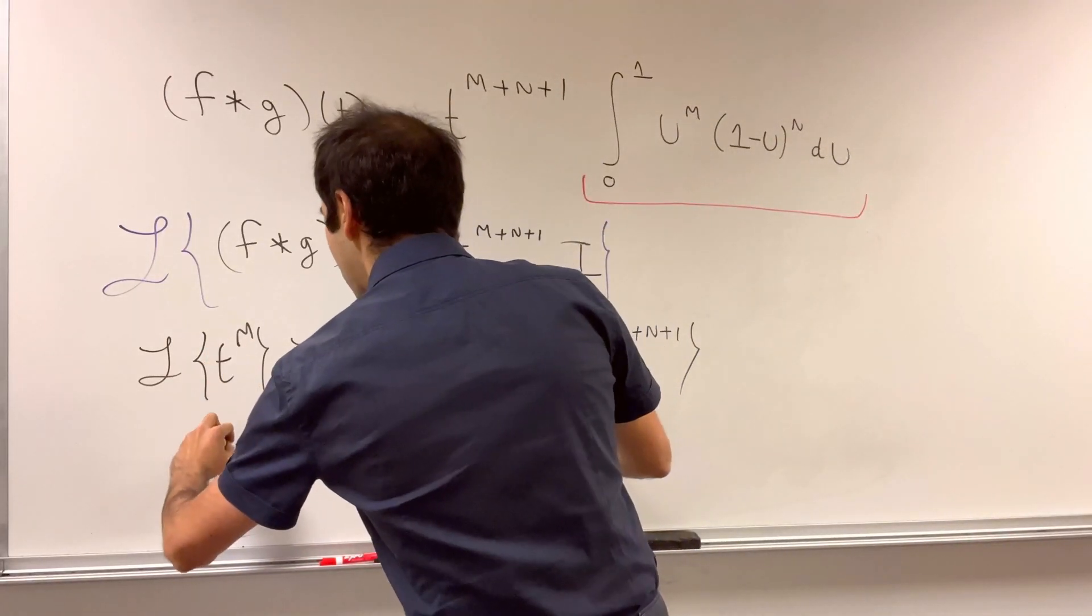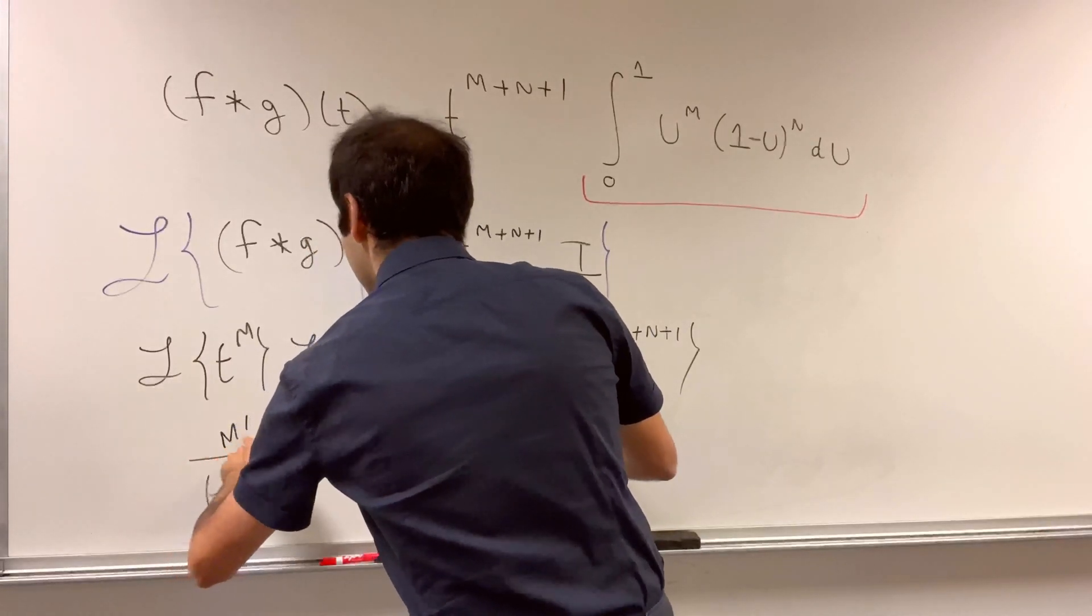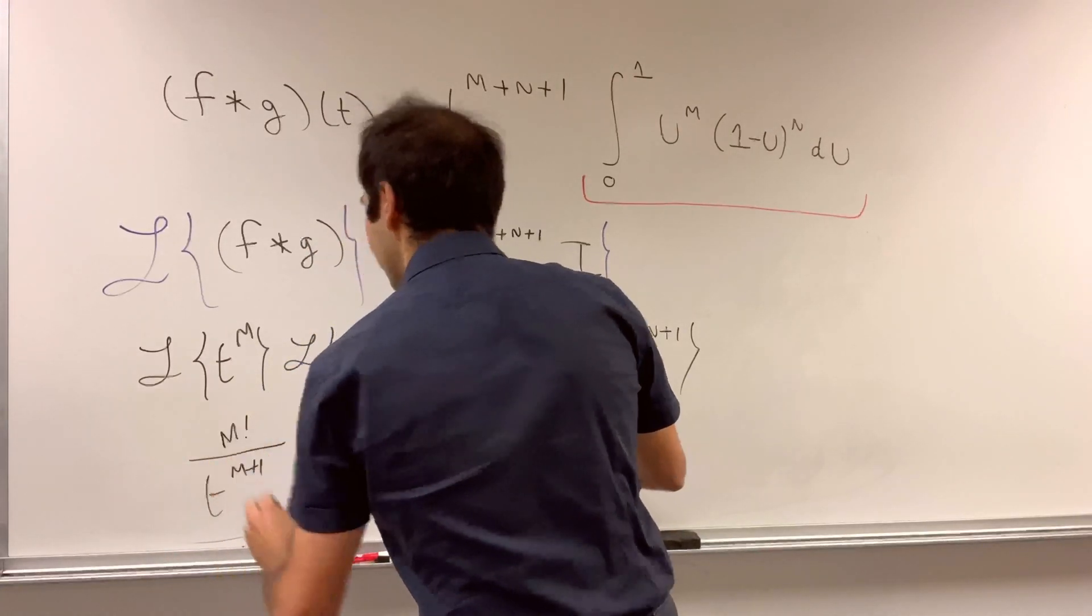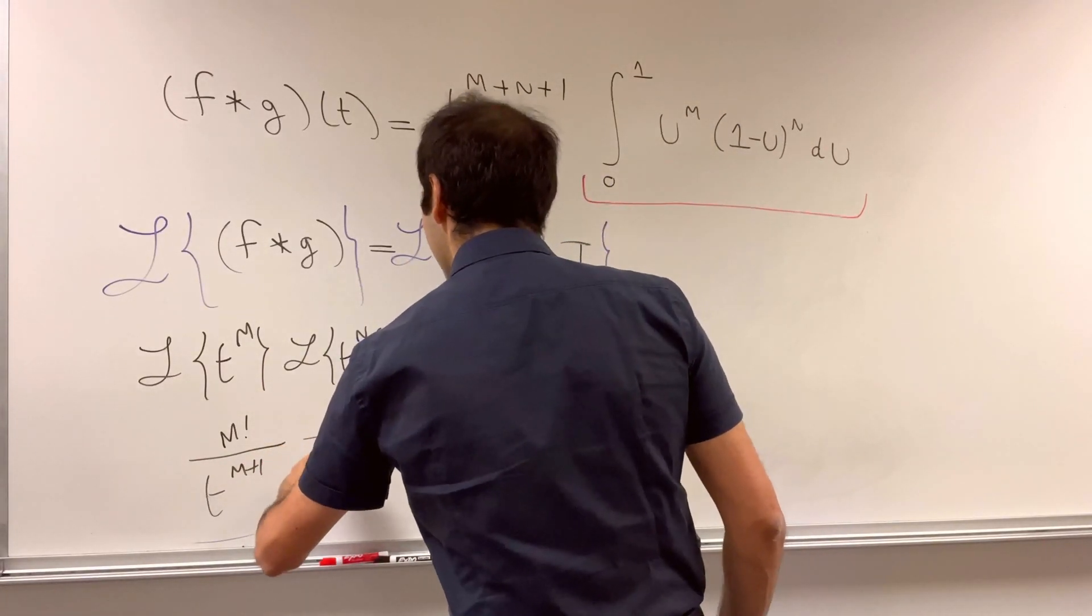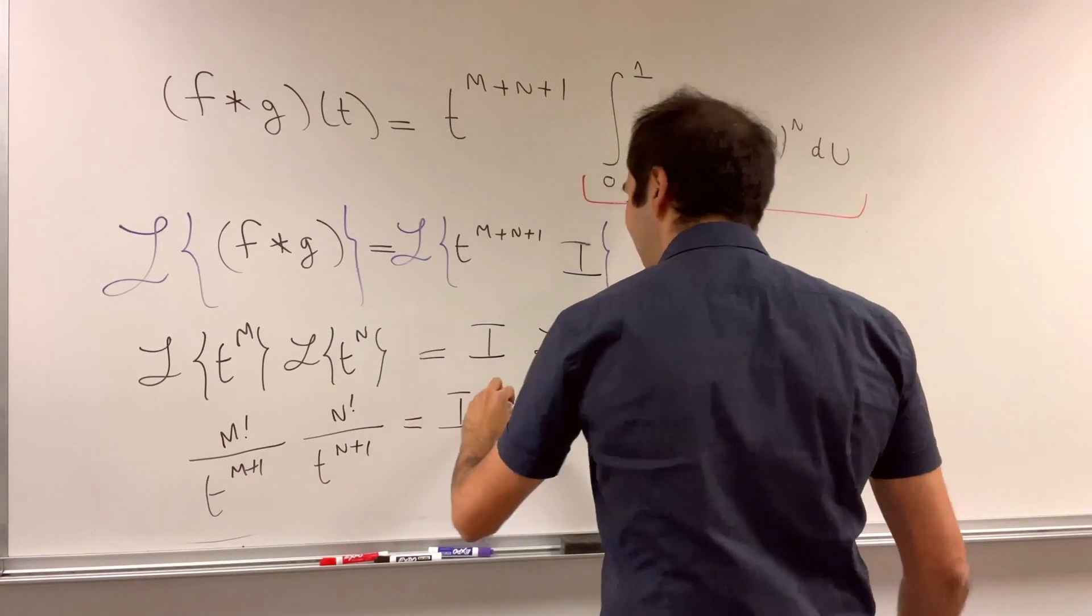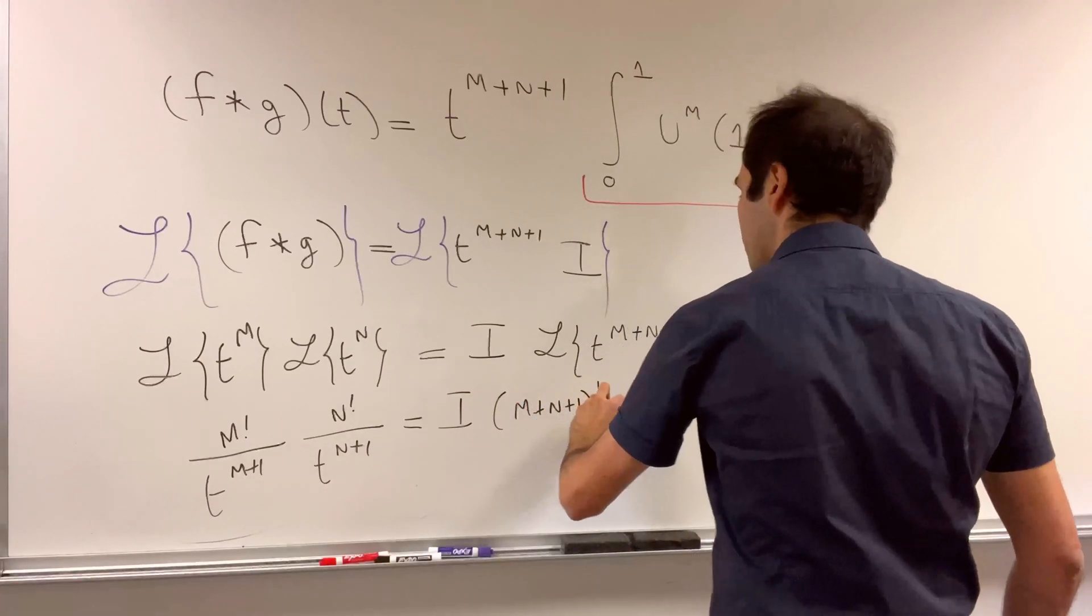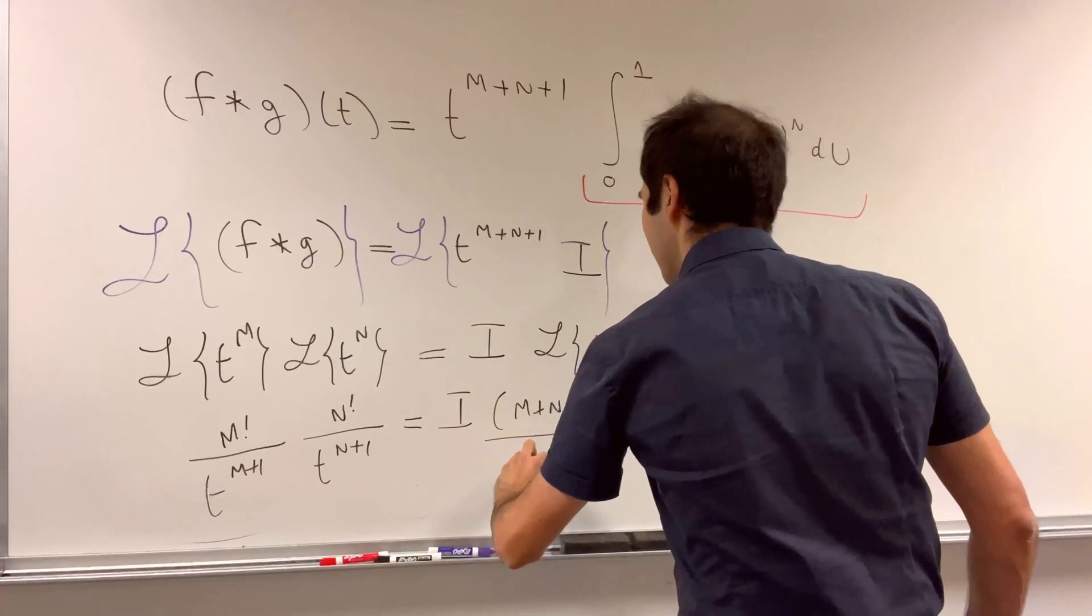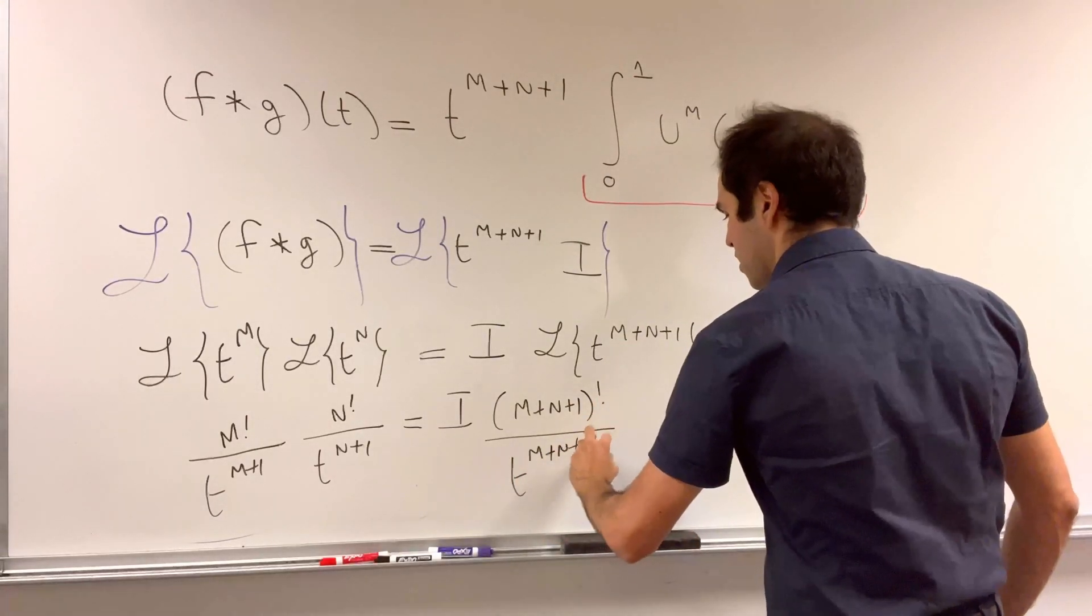This just becomes m factorial over s to the m plus 1. So you factorial the top and add 1 to the bottom. And then n factorial over s to the n plus 1 equals I times m plus n plus 1 factorial over s to the m plus n plus 2.